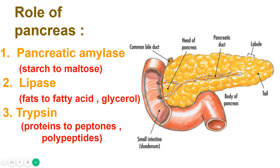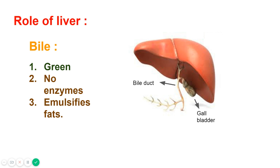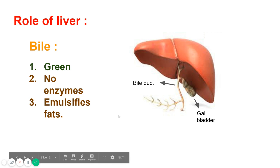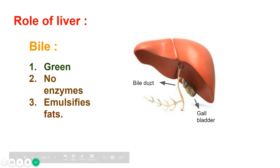Now let's see the role of the liver. The liver is a gland and inside it is the gallbladder, which stores bile. The liver secretes bile, which may be temporarily stored in the gallbladder and released into the duodenum through the bile duct. Bile is a green watery fluid that contains no enzymes.